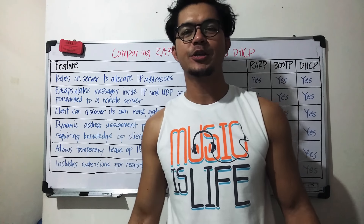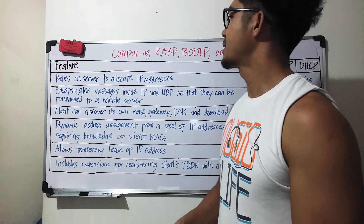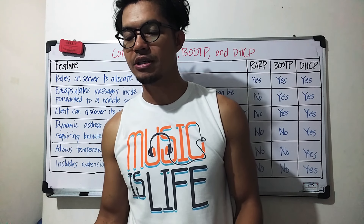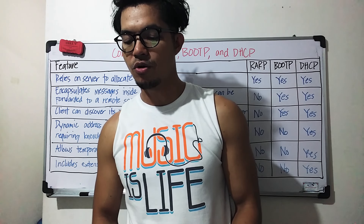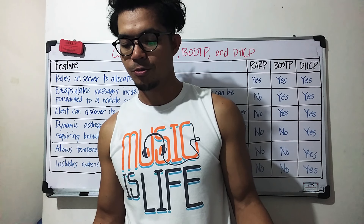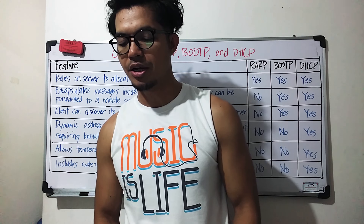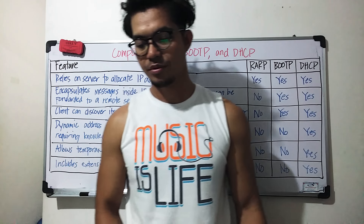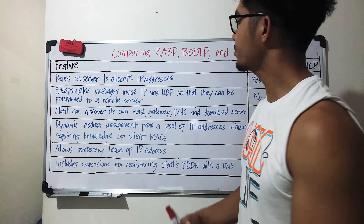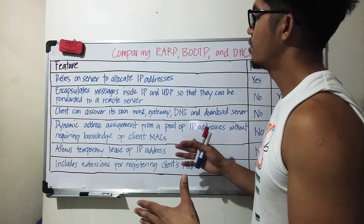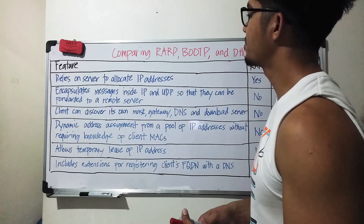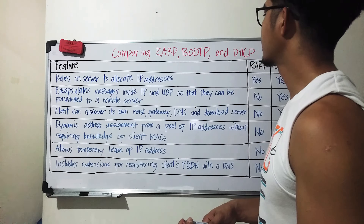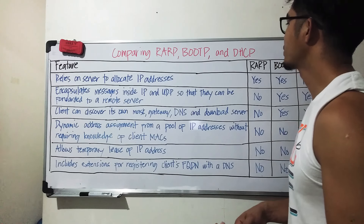In this video I'm going to talk about a table that I got from a book that I'm reading: CCIE Routing and Switching version 5.0 volume 1 fifth edition by Narbek and Peter. They are both CCIE. We'll be comparing RARP, or Reverse ARP, BOOTP or Bootstrap Protocol, and DHCP, Dynamic Host Configuration Protocol.